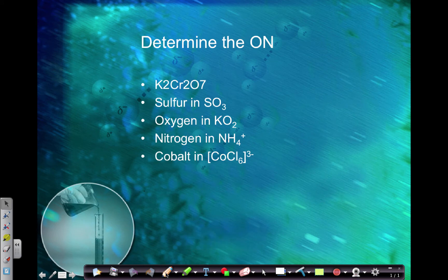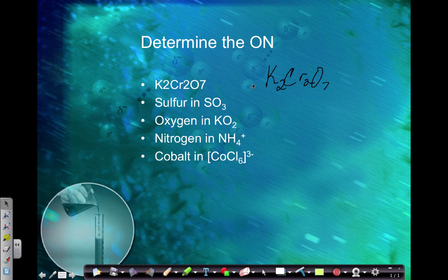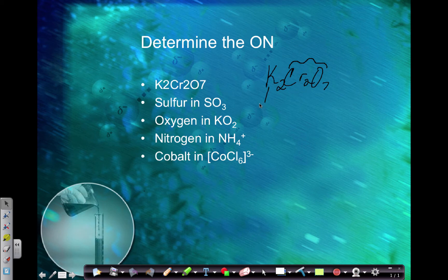Let's determine the oxidation number for potassium dichromate, K2Cr2O7. I'm going to figure out the oxidation number of each element. Overall, the oxidation numbers should add up to the charge of the entire compound, which in this case is zero. We have potassium and dichromate, so we'll look at them separately. Potassium is in group one, so its oxidation number is always plus one.